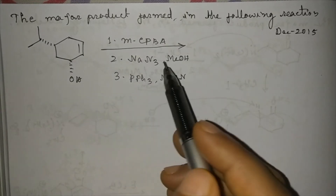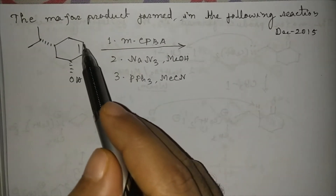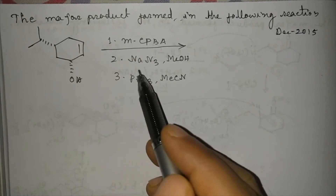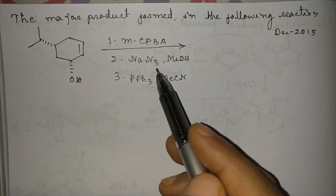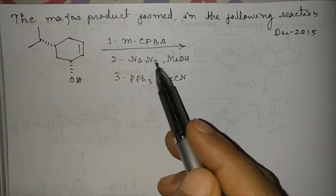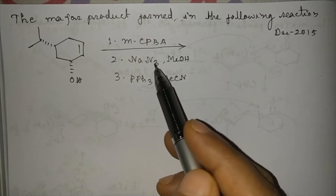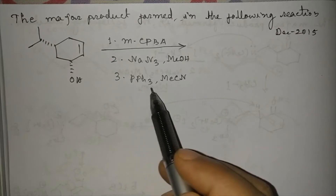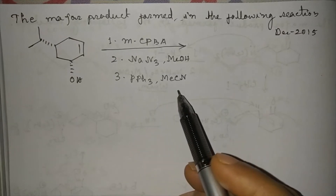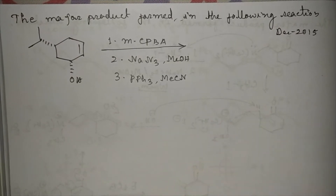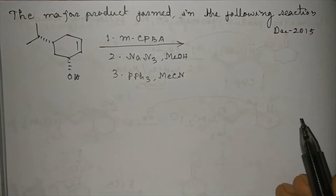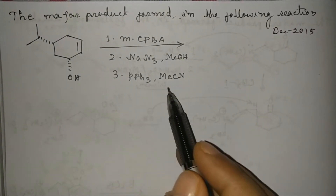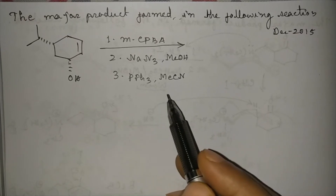Since the OH group is below the plane, epoxidation will mainly take place from below the plane. When treated with NaN3, the azide ion (N3 minus) will open up the epoxide ring. After treatment with PPh3, the final product will come via the Staudinger reaction — this is an important named reaction and we will discuss the mechanism in detail.